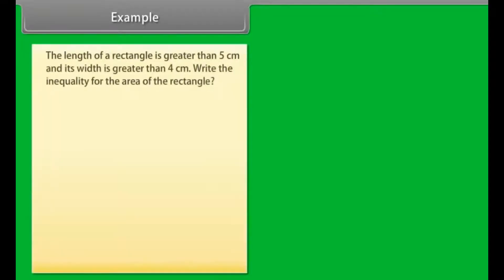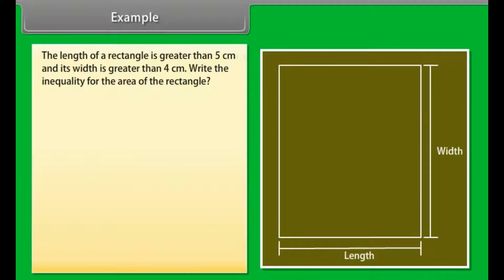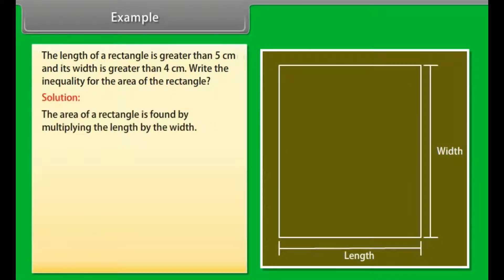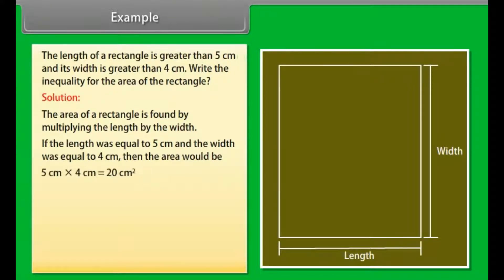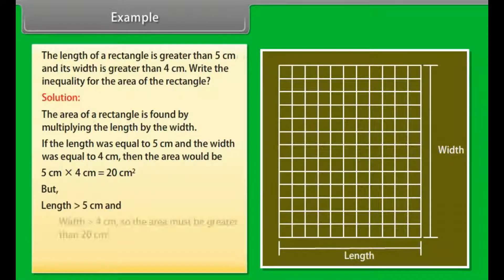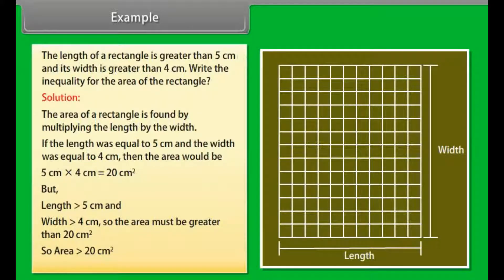Example: The length of a rectangle is greater than 5 cm and its width is greater than 4 cm. Write the inequality for the area of the rectangle. Solution: The area of a rectangle is found by multiplying the length by the width. If the length was equal to 5 cm and the width was equal to 4 cm, then the area would be 5 cm × 4 cm = 20 cm². But since the length is greater than 5 cm and the width is greater than 4 cm, the area is greater than 20 cm².